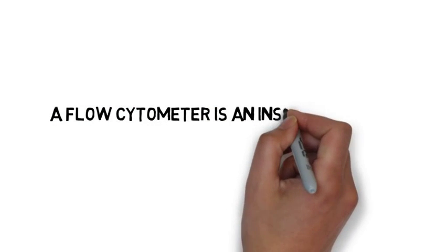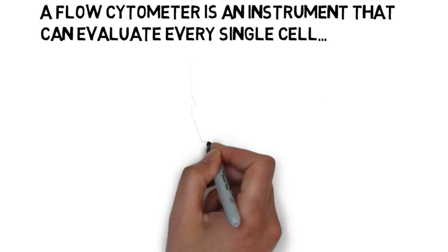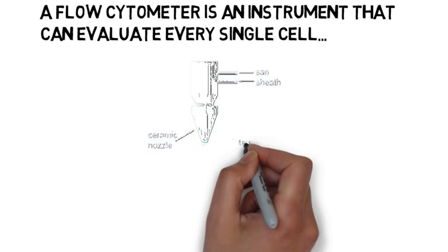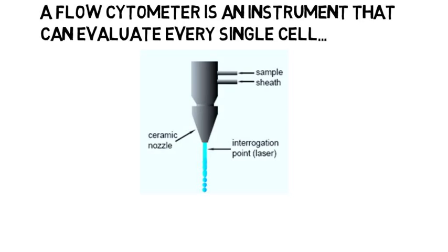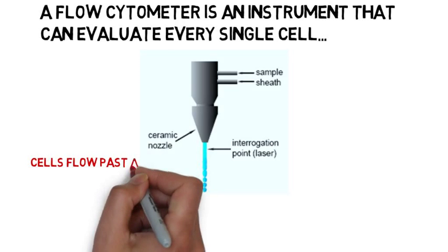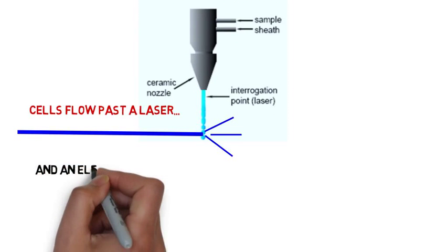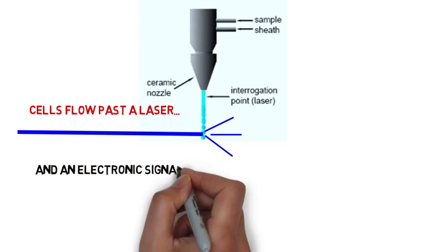What is important to understand is that a flow cytometer is an instrument that can evaluate every single cell. Each cell is in a suspension as it flows through a special chamber and passes by a powerful laser. The signals that come from each cell are collected by a computer and they're plotted on a screen like this graph.